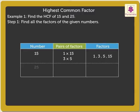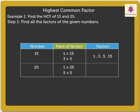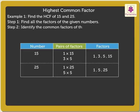Next, the pairs of factors of number 25 are: 1 × 25 = 25, and 5 × 5 = 25. Thus the factors of 25 are 1, 5, and 25. Step 2: identify the common factors of the given numbers.